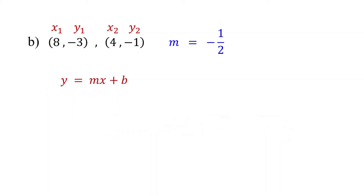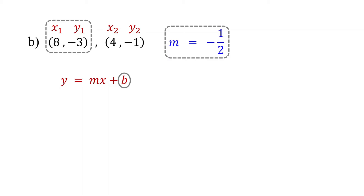In slope-intercept form, m represents the slope and b represents the y-intercept. Since we have already found the slope, the next step is to find the y-intercept. Note that because the points lie on the line, they are solutions to the equation, which means we can substitute their values for x and y. So substitute the slope and one of the points into the slope-intercept form. Let's use the first point. Replace y with negative 3, m with negative one half, and x with 8.